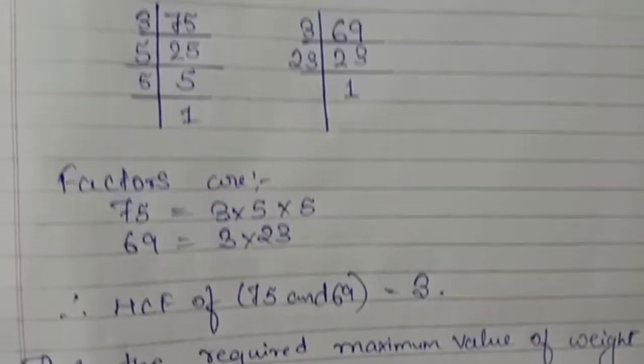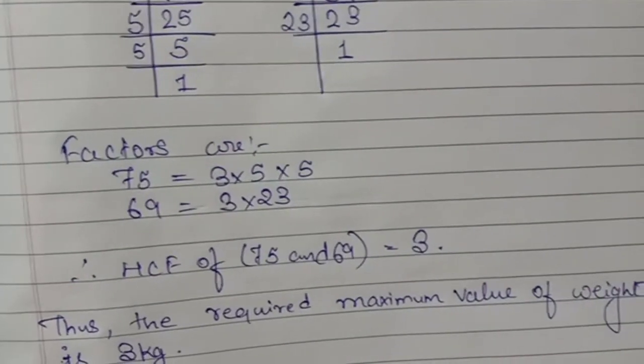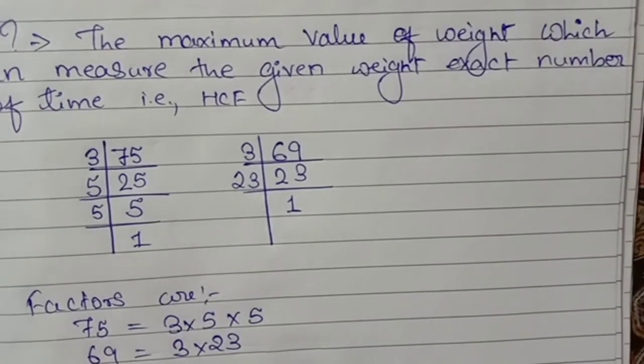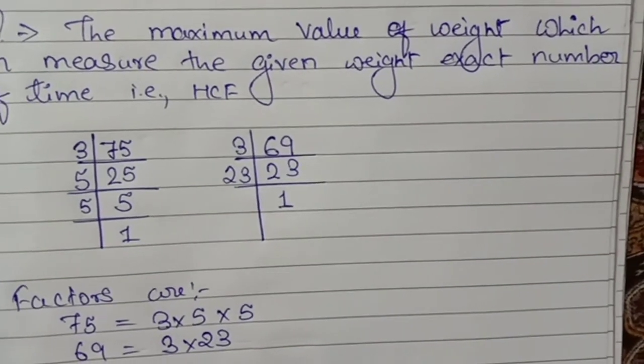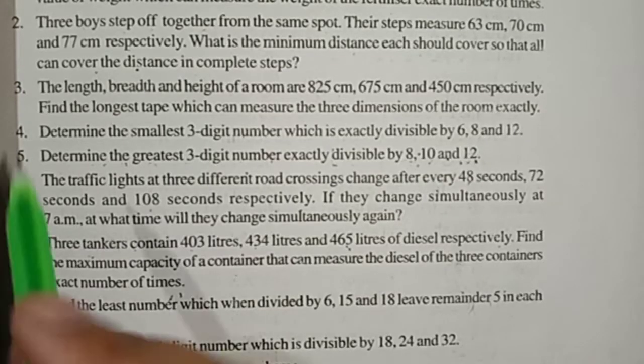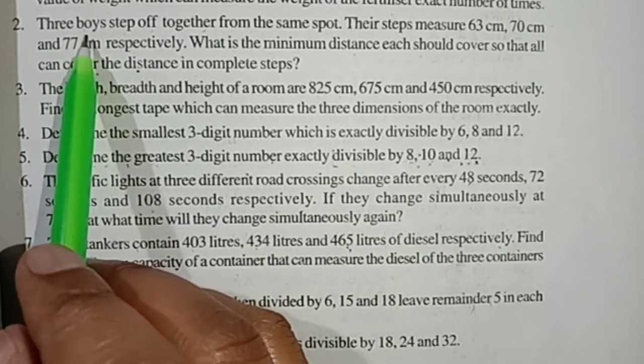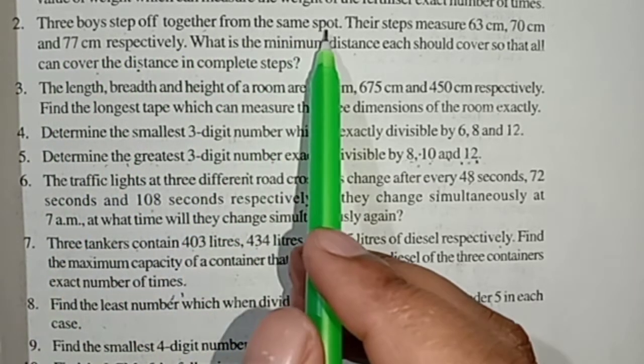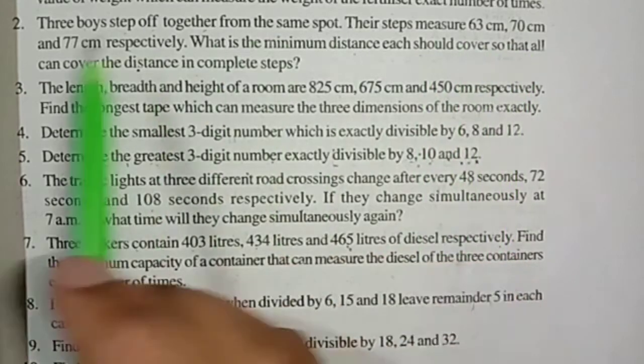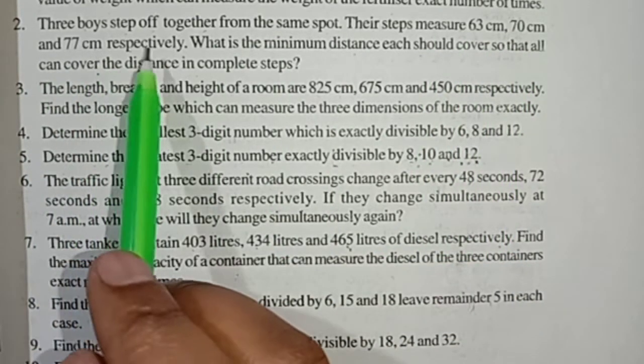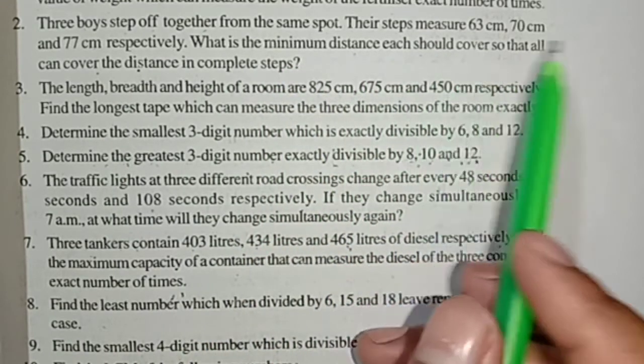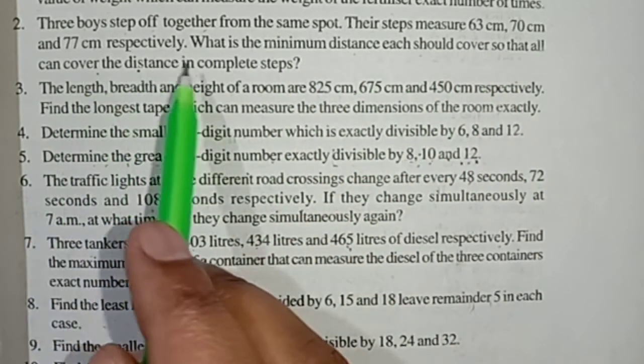This is the solution number one. I hope students all of you understand. Now question number two: Three boys step off together from the same spot. Their steps measure 63 cm, 70 cm and 77 cm respectively. What is the minimum distance each should cover so that all can cover the distance in complete steps?